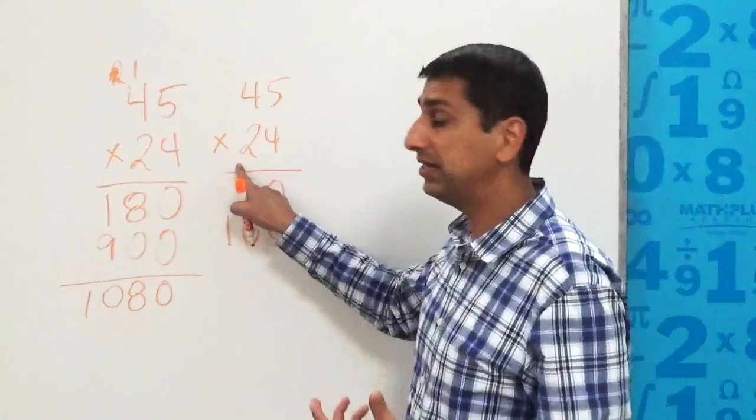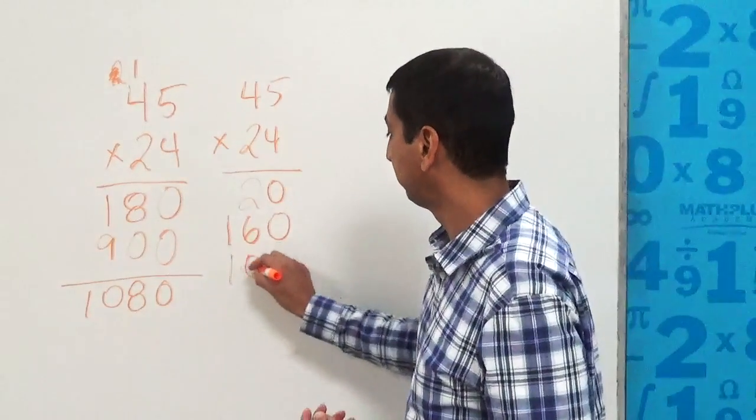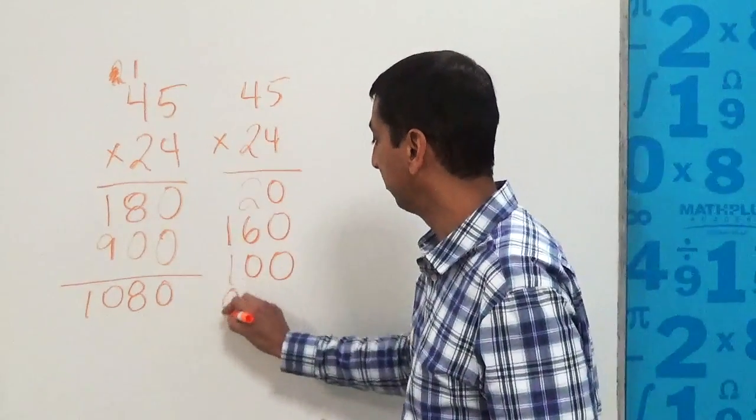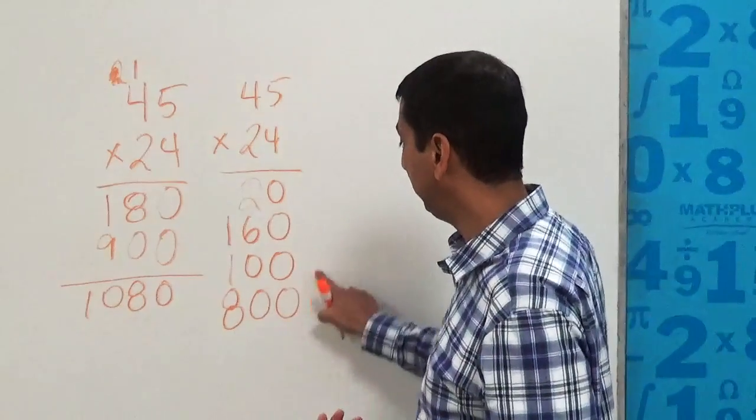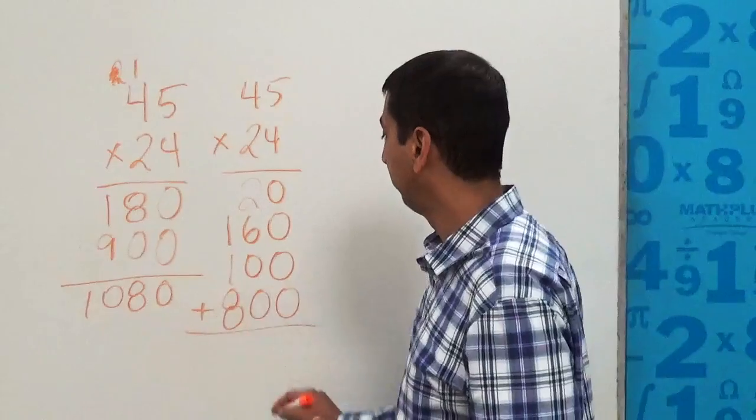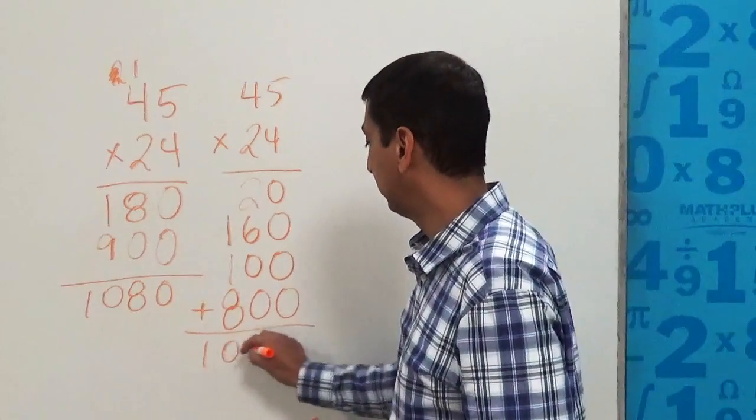Then I have not two, but 20 times five, which is 100, and I have 20 times 40, which is 800. And you'll notice, again, these two here are 900. That's just what we have there. We'll add them all up, and we will get 1,080 again.